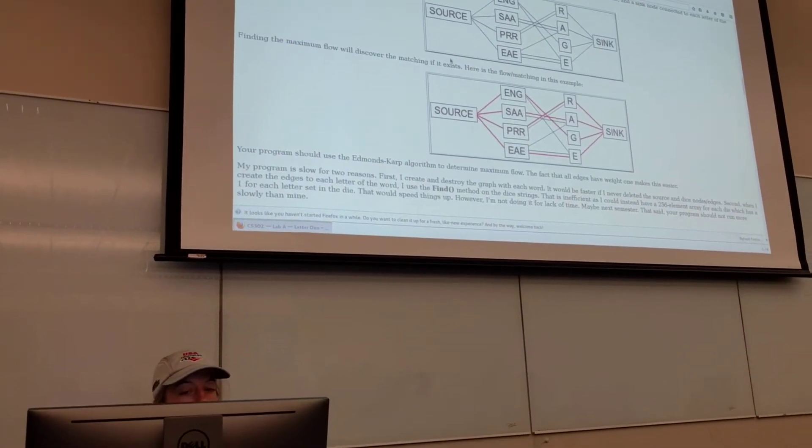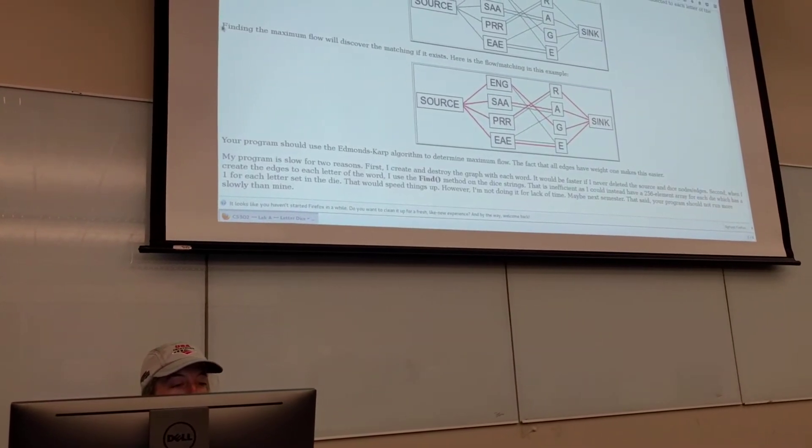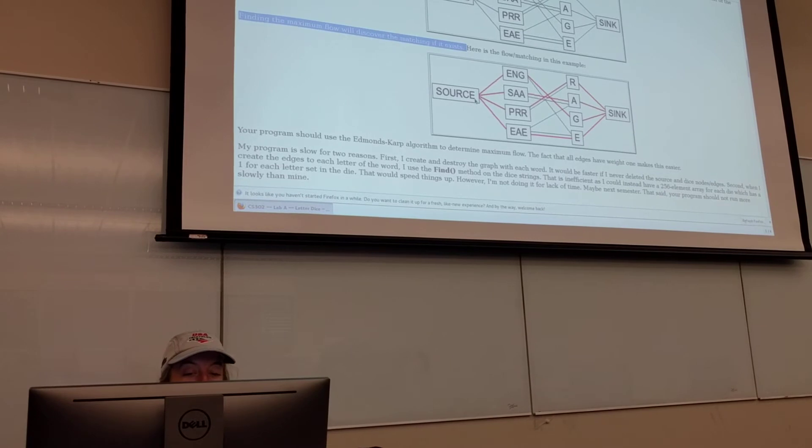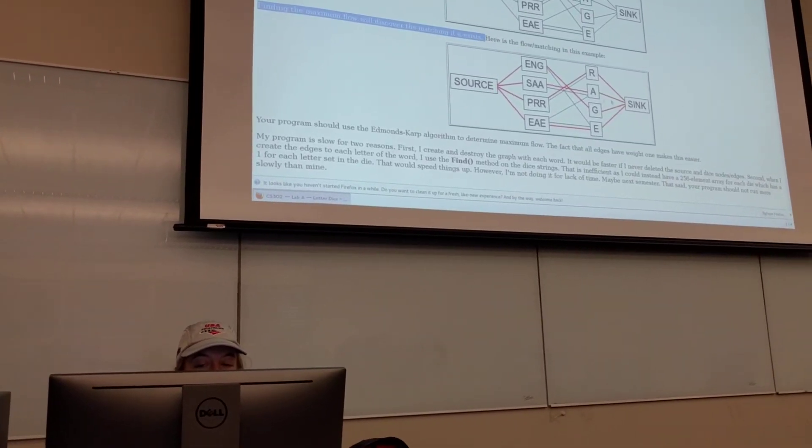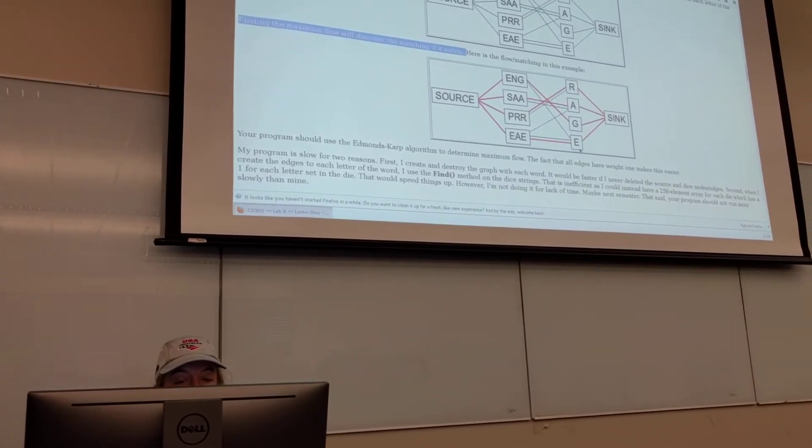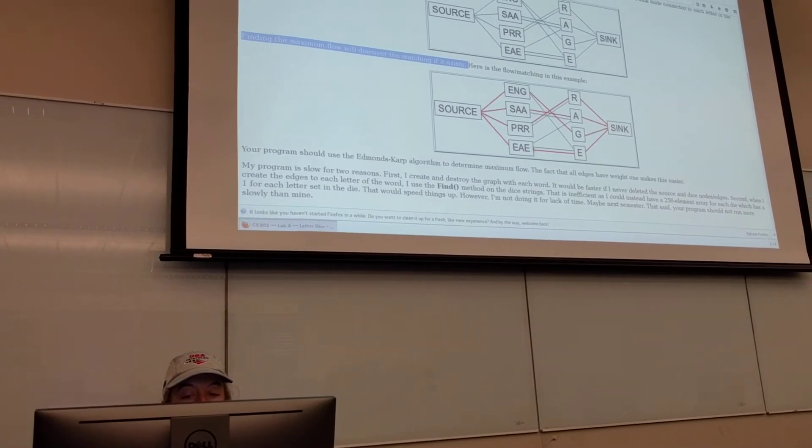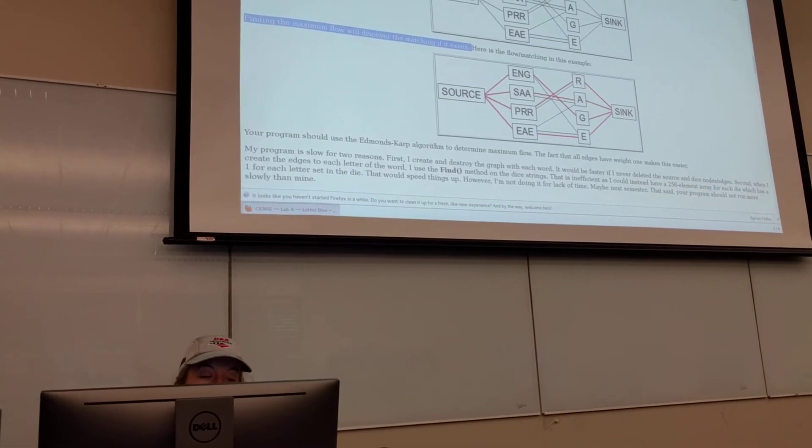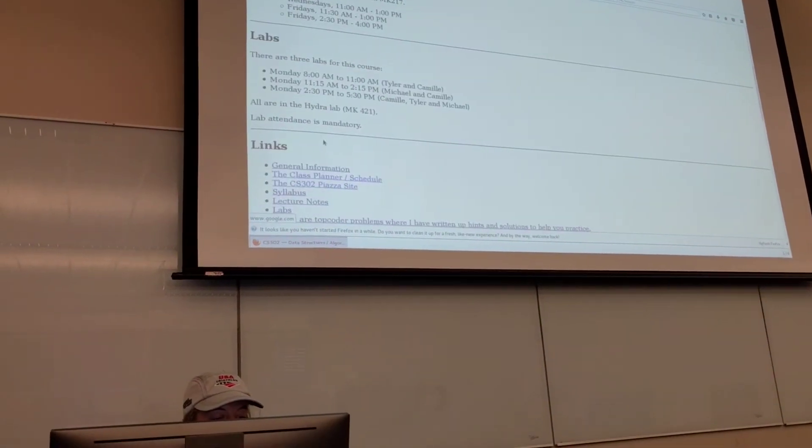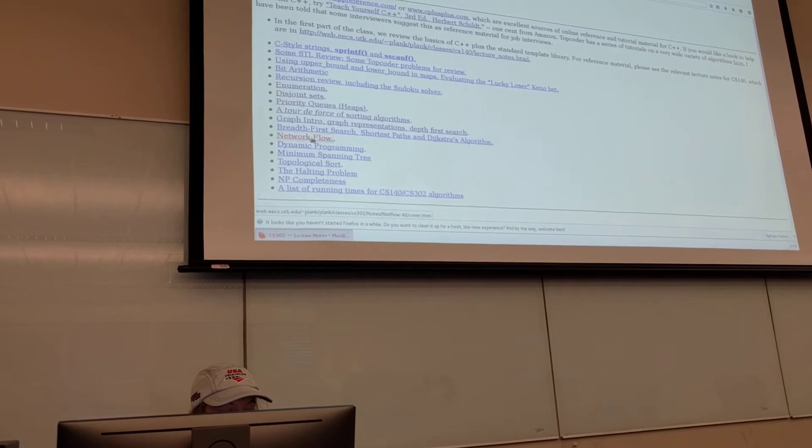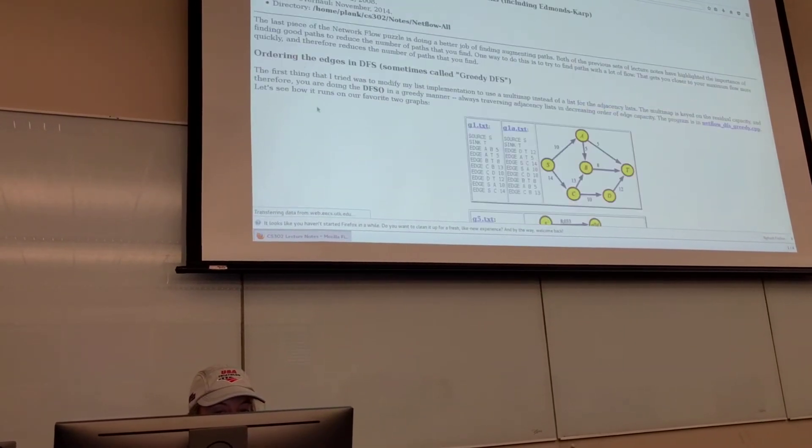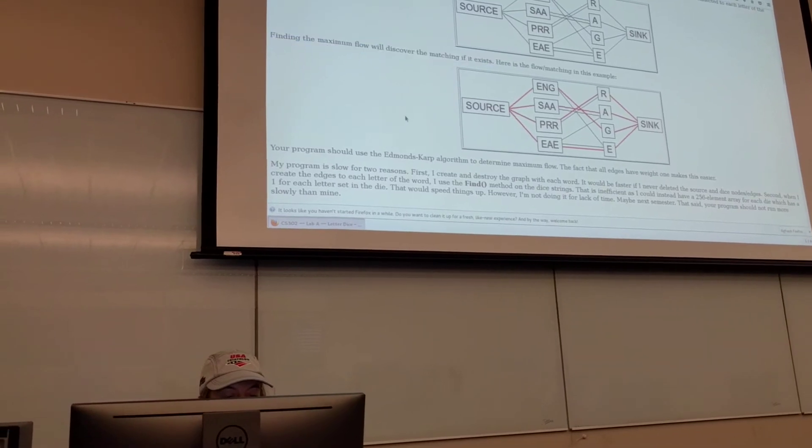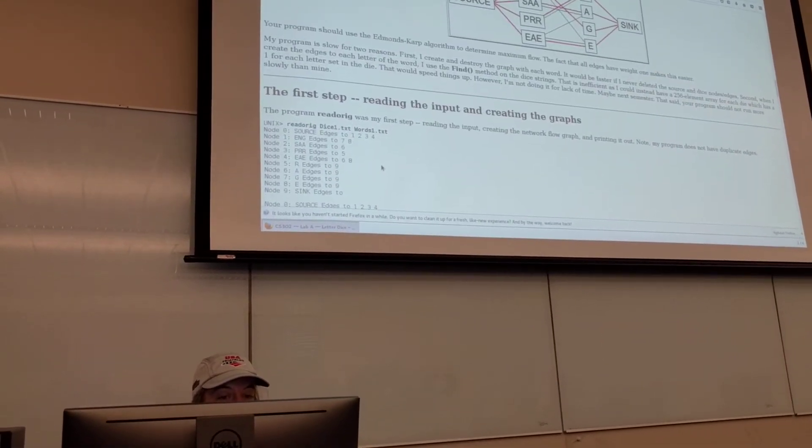And then he adds a source and a sink. Finding the maximum flow will discover if a matching exists. This is a very hand-wavy explanation of what we're doing here. But what we're essentially doing is saying, okay, can we find paths that take us from the source to the sink that go through each one of these letters and only use the dice exactly once for each letter? We're going to use Edmund Karp algorithm to determine maximum flow. That should be right here in your lecture notes. Different ways of finding augmenting paths.